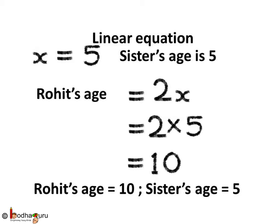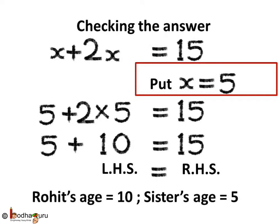Now how to verify whether we got the correct answer or not. We had the linear equation x plus 2x equal to 15. Putting the value of x as 5 on the LHS, we get 5 plus 2 multiplied by 5. 2 multiplied by 5 is equal to 10, and 10 plus 5 is equal to 15. We get 15 equal to 15, which means LHS equals RHS. So our solution is right. Rohit's age is equal to 10 and sister's age is equal to 5.